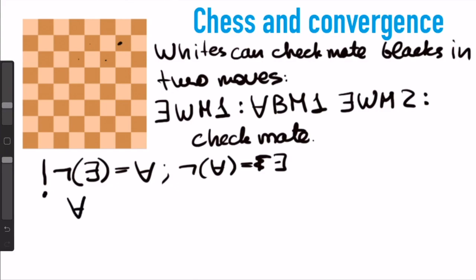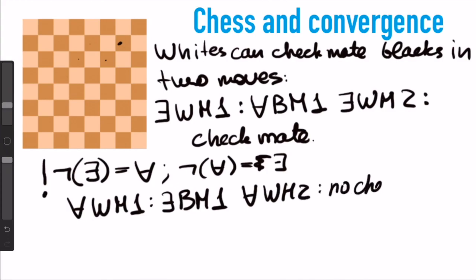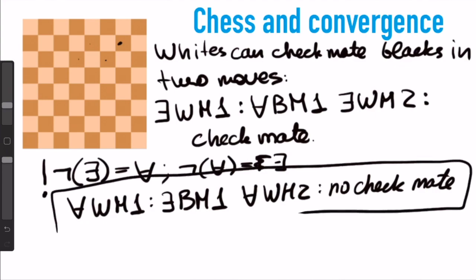we get: for all white move 1, there will be black move 1 after that, such that no matter what whites do at the next stage, the blacks will always be able to avoid their king being checkmated. So here is our sentence, take a second to ponder about it.